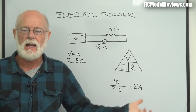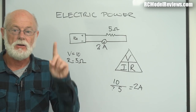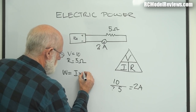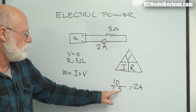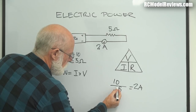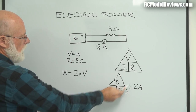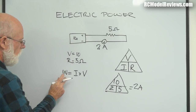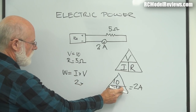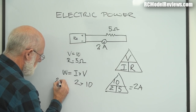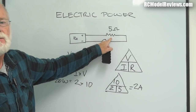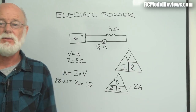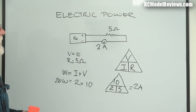Now, how much power is in the circuit? Using watts equals current times voltage: I is 2 and V is 10, so we have 20 watts. This resistor - or motor - is absorbing or releasing 20 watts of energy, and the battery is delivering 20 watts into that little circuit. That's pretty straightforward.